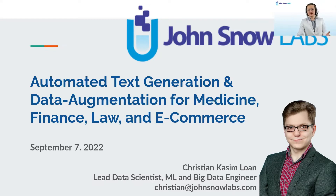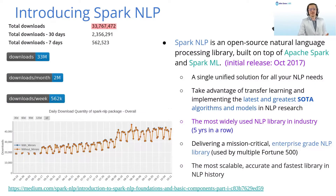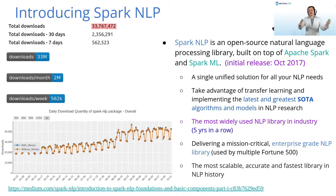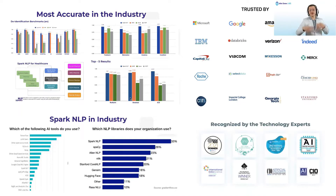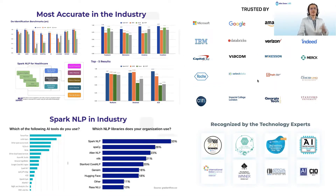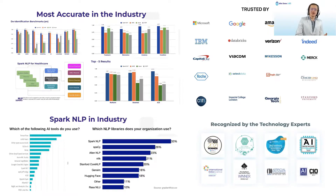We will be using for this the NLU Library. The NLU Library is a simple wrapper around Spark NLP, which itself is a big data library focused on being the most accurate, scalable, and fastest library out there. In just 5 years since its release, it has acquired millions of downloads, has become the most accurate in the industry, is trusted by various companies and recognized by technology experts with various awards and honors. It became the most used NLP library in the industry.